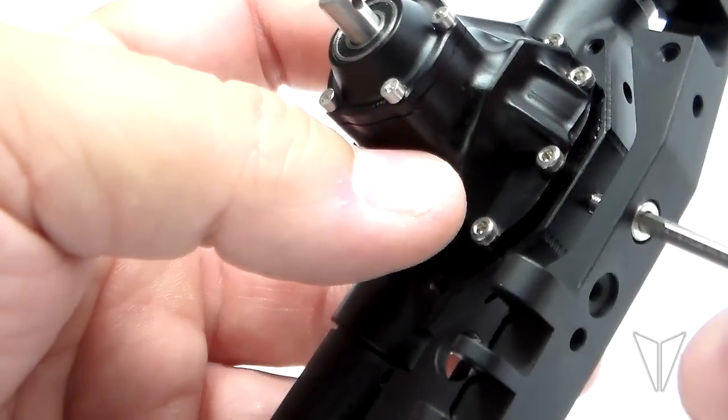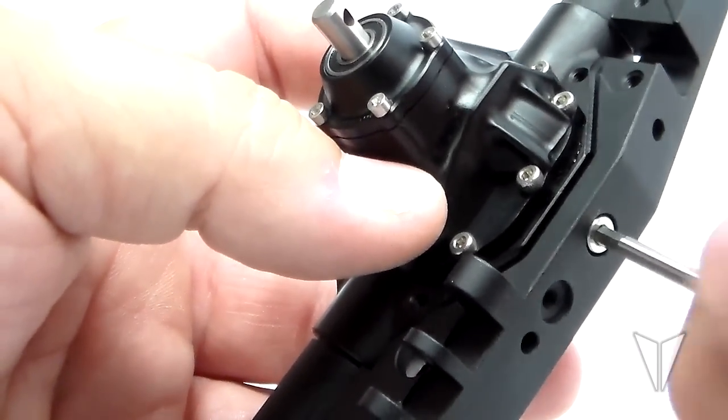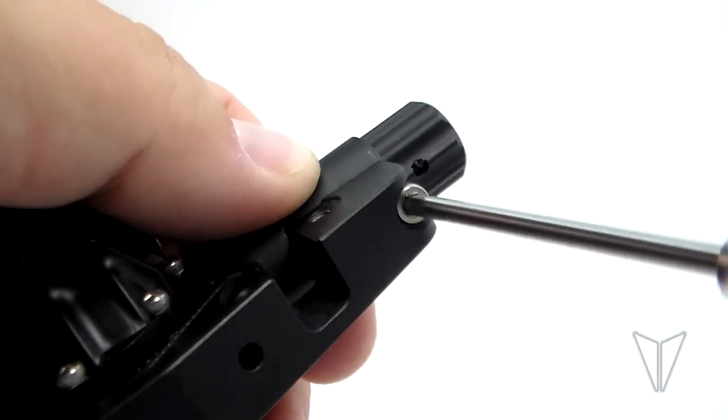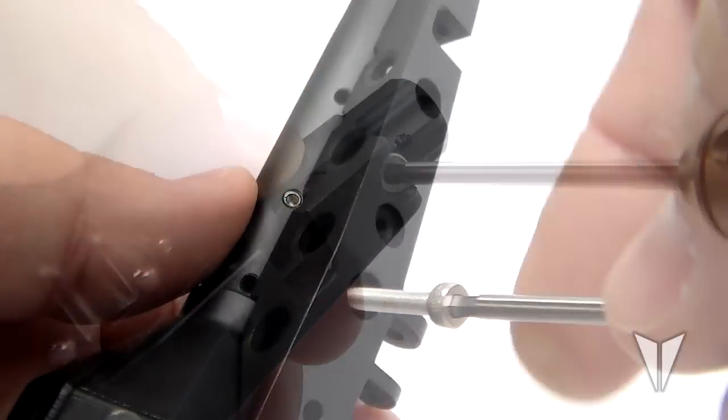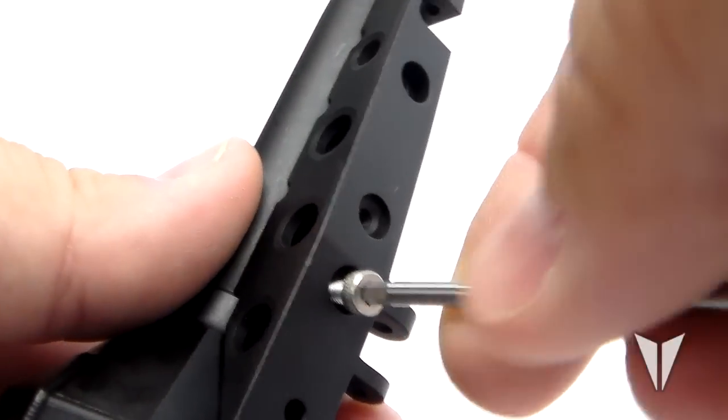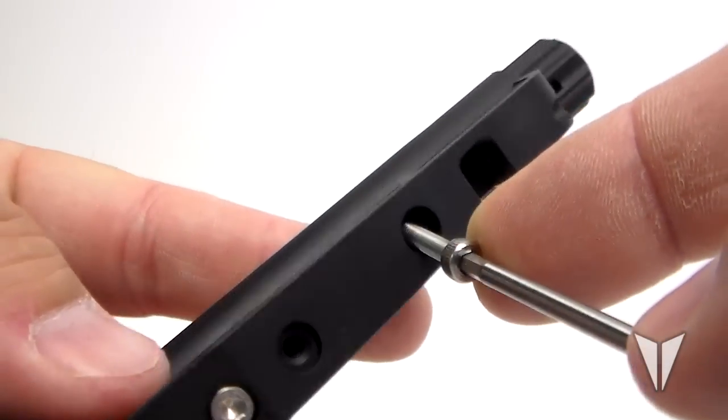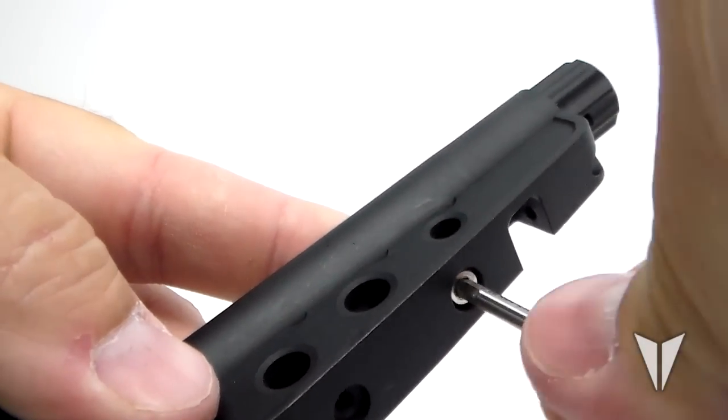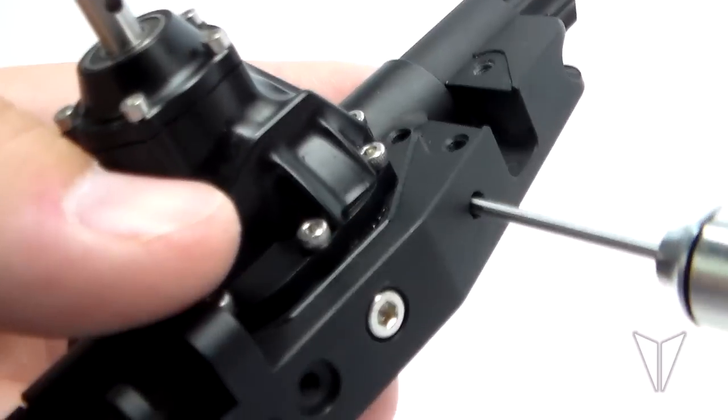Then attach the M3 by eight millimeter center truss bolt, followed by the M3 by six millimeter on the short tube and the M3 by twenty and the M3 by fourteen on the long tube respectively. Once those are in place we can retighten the set screws.